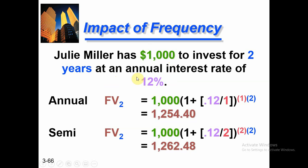If there is no compounding and Julie Miller is only getting annual interest, FV₂ equals $1,000 multiplied by (1 plus 0.12) raised to the power of 1 times 2, where the compounding period M equals 1 per year and N equals 2 years. After two years the total future value of this investment for Julie Miller will be $1,254.